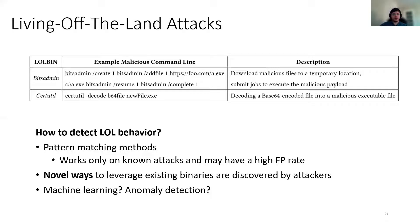So how can we detect this behavior? Solutions that attempt to detect such attacks are typically based on heuristics and regular expression matching, but they only work well against known behavior and may not be specific only to the malicious usage of the binary, so false positive rate could be high. There are novel ways to leverage existing binaries discovered by attackers every day. Machine learning approaches may work well, but there are usually not enough labeled samples to train effective classifiers. Anomaly detection modules could be used to detect new attack types, but only when the malicious behavior diverges significantly from the benign use case.